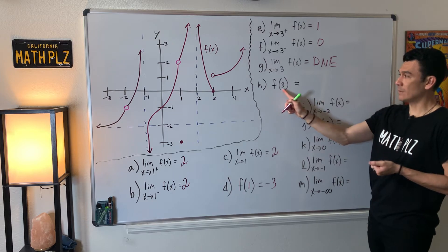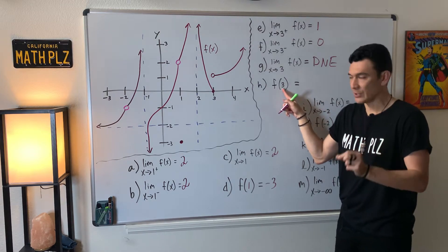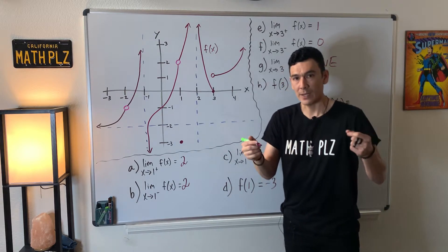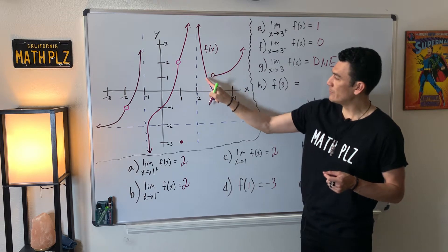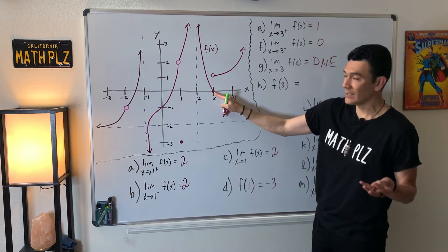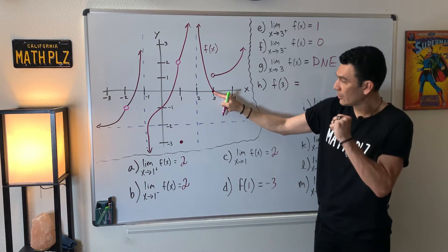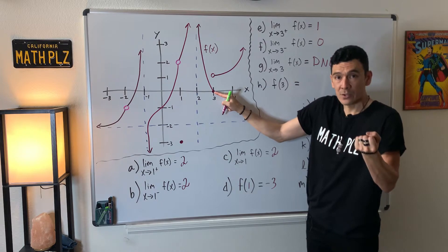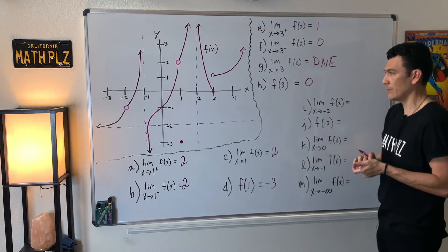Now for part H, it's a straight-up evaluation: plug in three for x and see what y you get back. Going to three on the x-axis and to the graph — we're actually lucky because there's a solid point there. The y coordinate of that solid point happens to be zero.